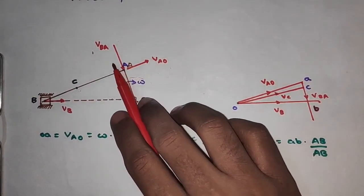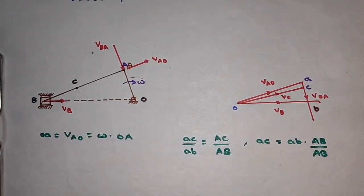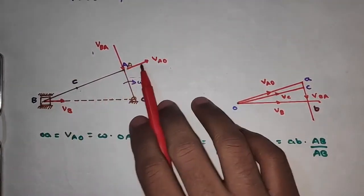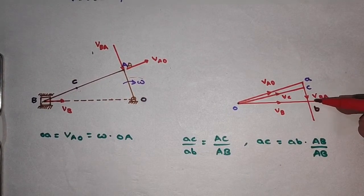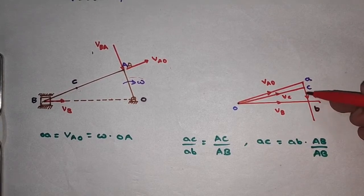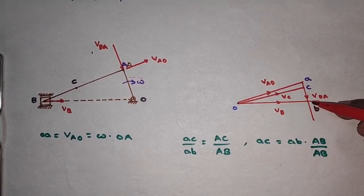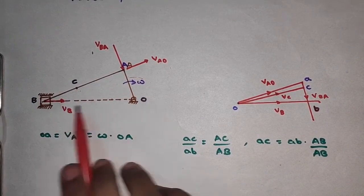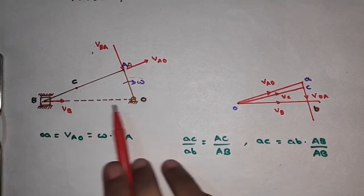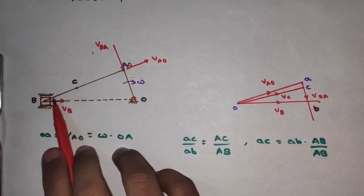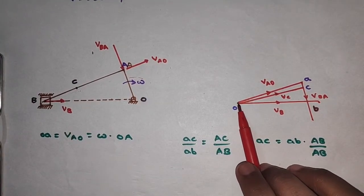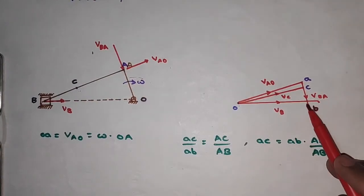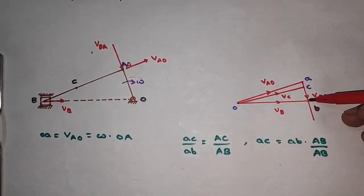Next, we know the direction of the velocity of the connecting rod but not its magnitude. From point A, draw vector AB perpendicular to link BA. Since the length is unknown, we draw it with the known direction only. To obtain point B, we use the slider component: the slider moves horizontally, parallel to the fixed link OB. From O, draw a line or vector parallel to this sliding axis. This vector intersects the previously drawn VBA line at point B.